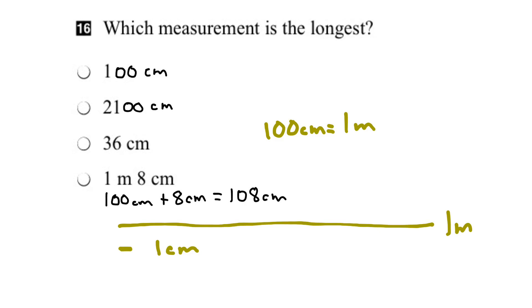Okay, so if we look at these measurements now, let's compare them. 100 is smaller than 2100, so that's the biggest one so far. 36 is smaller than 2100, so it still is the biggest. And 108 centimeters is smaller than 2100 centimeters. So we know that this is the largest measurement, largest length.